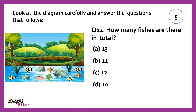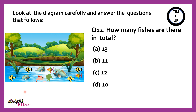How many fishes are there in total? Counting: 1, 2, 3, 4, 5, 6, 7, 8, 9, 10, 11. So there are 11 fishes in total. Answer B.